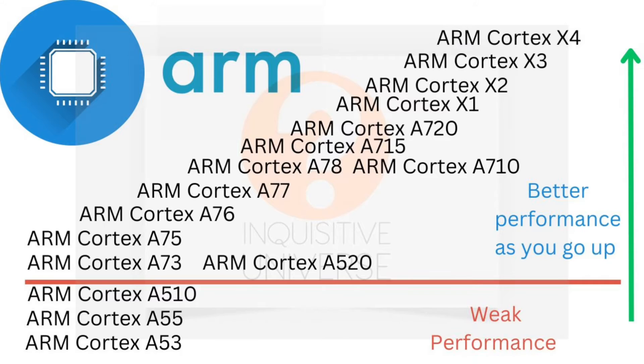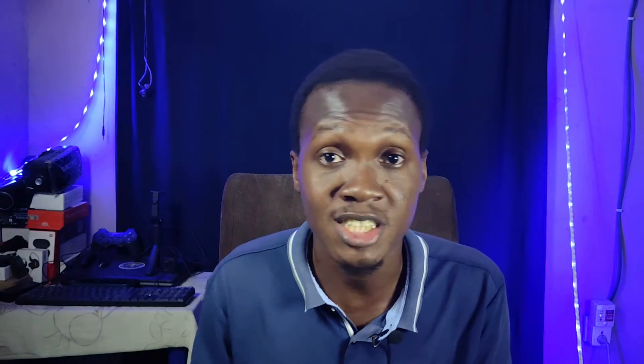If you have more money and want better performance, look for SOCs with Cortex-A76 or A78 CPU cores — something like the Helio G88 or Snapdragon 732G. With even more budget, look for A78-based SOCs like the Exynos 1280, 1330, 1380, 1480, Snapdragon 7 Gen 1, or Dimensity 8000, 8020, 8050. The higher you go in terms of CPU core generation, the better the performance you get.